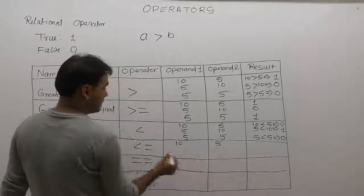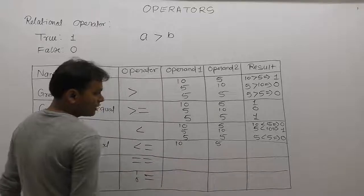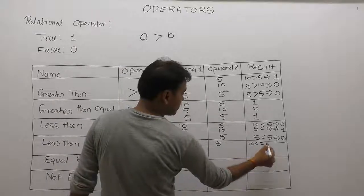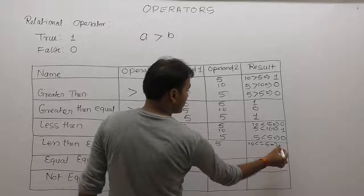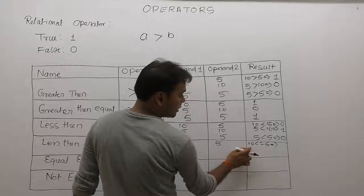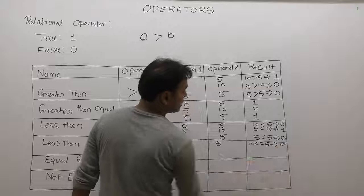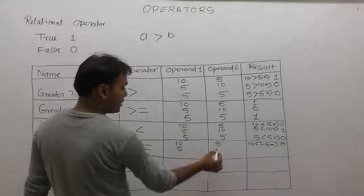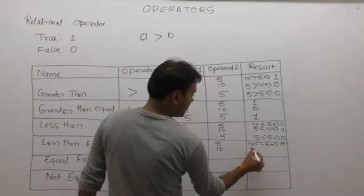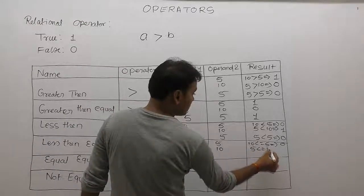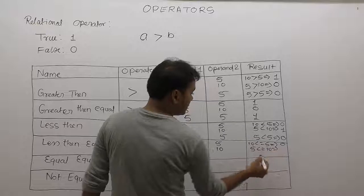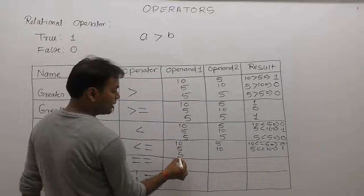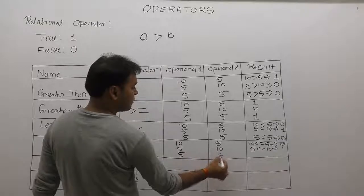For less than or equal to: ten less than or equal to five — ten is not less than nor equal to five, therefore false, means zero. Five less than or equal to ten — five is less than ten, therefore true, means one. Five less than or equal to five — five is equal to five, therefore true.